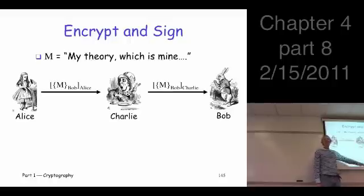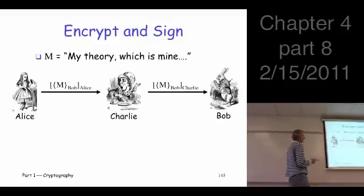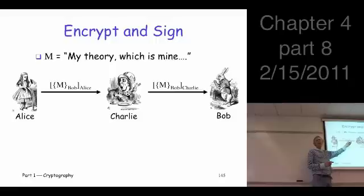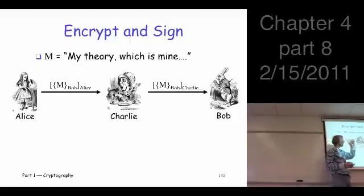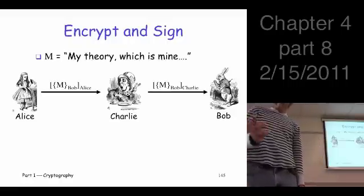Charlie intercepts the message. He's still kind of ticked off about this whole thing. And he knows he can't decrypt this, because it's encrypted with Bob's public key. He can, however, undo this, because that requires Alice's public key. He does that, and he says, it's very unusual for Alice to sign and encrypt something. This must be important. So just to cause trouble, I'm going to take whatever that is, which I can't read, and I'm going to sign it with my private key and send it on to Bob. So now what does Bob think?